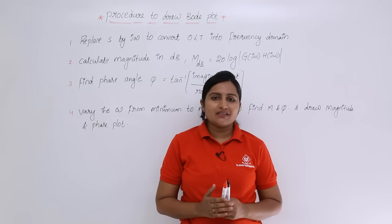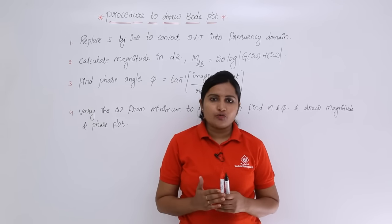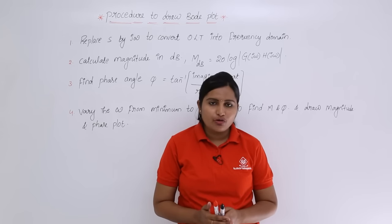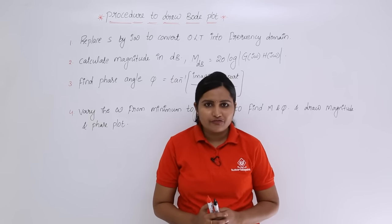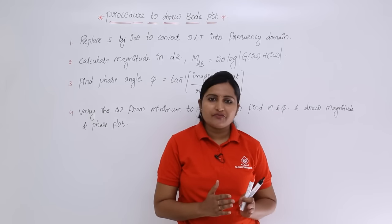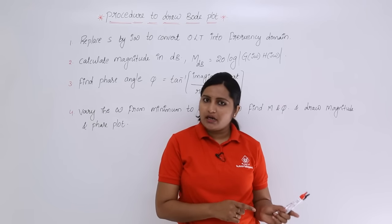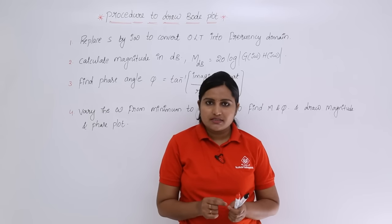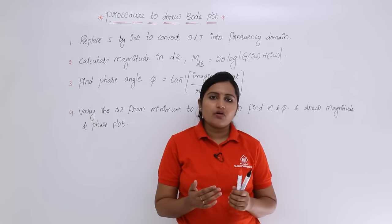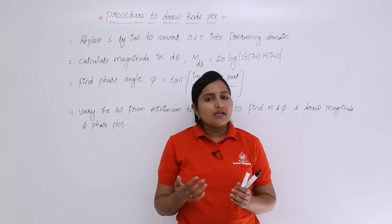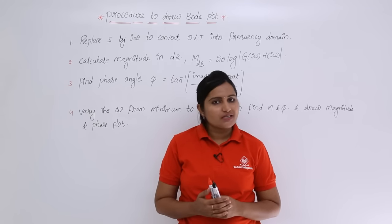In this video we are going to see the procedure to draw a Bode plot. We already discussed that a Bode plot is the combination of a magnitude plot and a phase plot. In both plots the x-axis is the same — angular frequency ω. The difference is in the y-axis: for the magnitude plot it is magnitude in dB, and for the phase plot it is φ, the angle of the open loop transfer function.